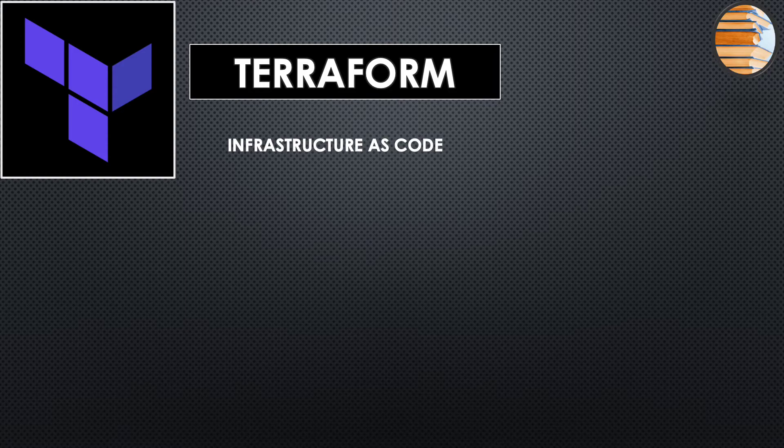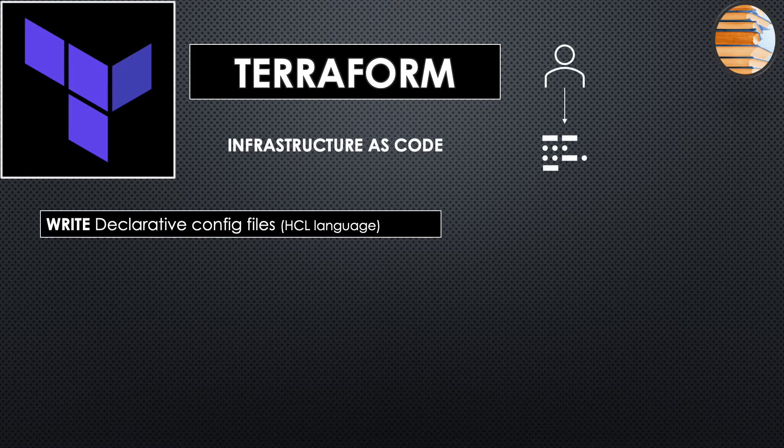Terraform is used to manage your infrastructure through code. You write config files which are in HCL language, that is HashiCorp Configuration Language. The programming style followed here is declarative, meaning you need not worry about the flow of execution or the state — Terraform handles it for you. You just have to write what you want your end result to be.